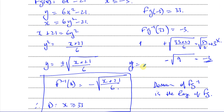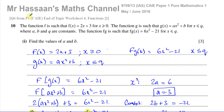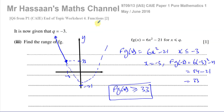That completes question 10 from this paper and question 6 from the end-of-topic worksheet. Other questions from this May-June 2016 Variant 3 paper, from the Cambridge Pure Mathematics 1 9709 syllabus, can be found in the playlists linked on screen. You can subscribe to the channel by clicking the link. Thanks for watching and see you soon.